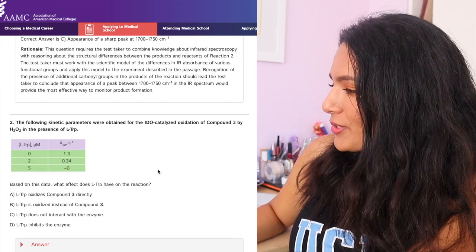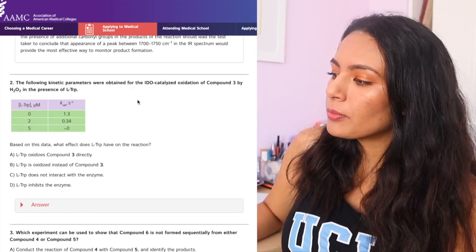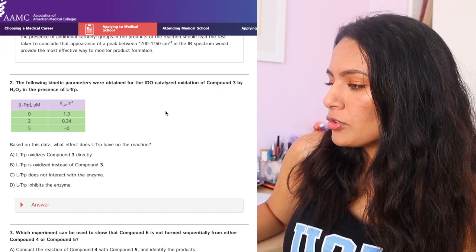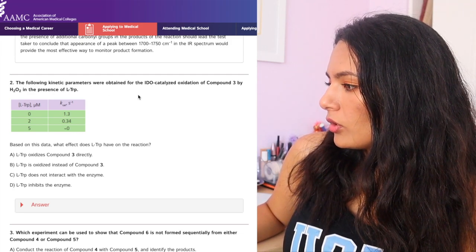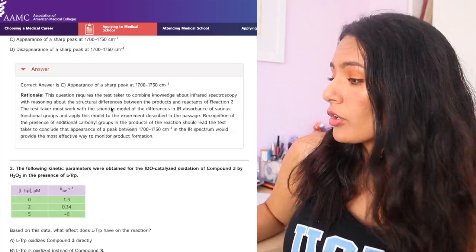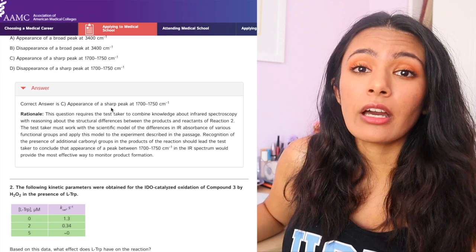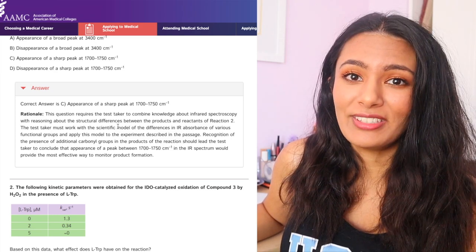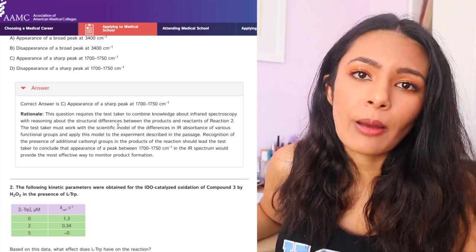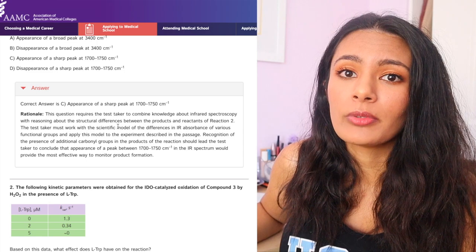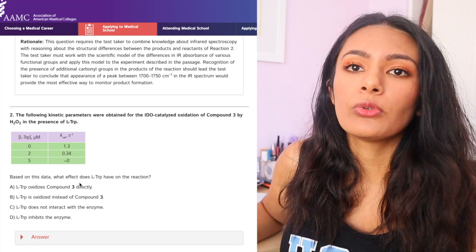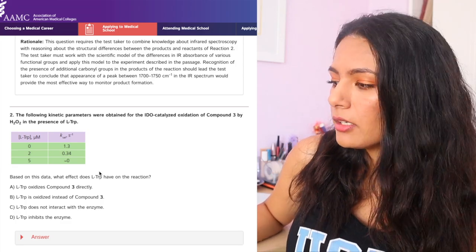Okay, let's go on to number two. So number two says, the following kinetic parameters were obtained for the IDO-catalyzed oxidation of compound 3 by H2O2 in the presence of LTRP. Okay, so right off the bat, they give us another entire chart that I don't even think was in that original passage. And so it just kind of goes back to the same thing where you don't really need to read those passages in depth in chem-phys. So don't waste time. I promise you're going to be crunched for time on the first section anyway.